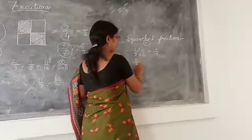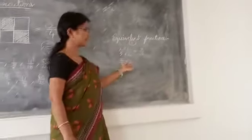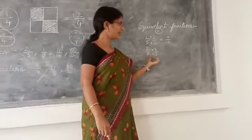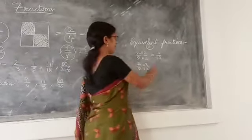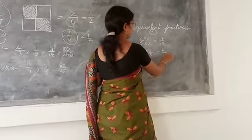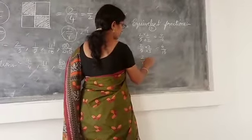And you take another number. Here I take 3. Multiply with the numerator with 3 and denominator also with 3. Here 2 times 3 is 6 and 5 times 3 is 15.